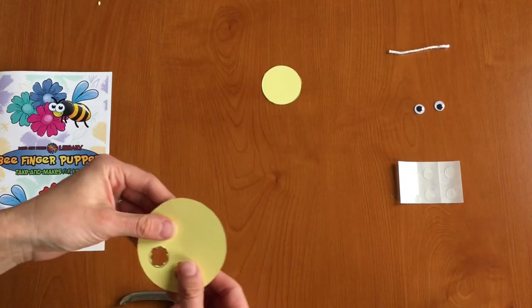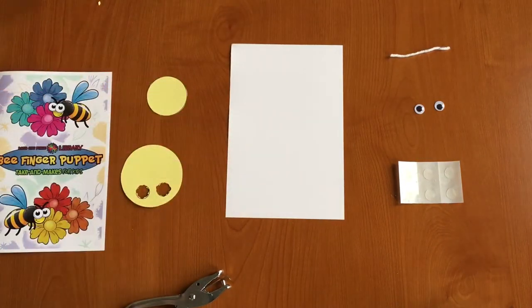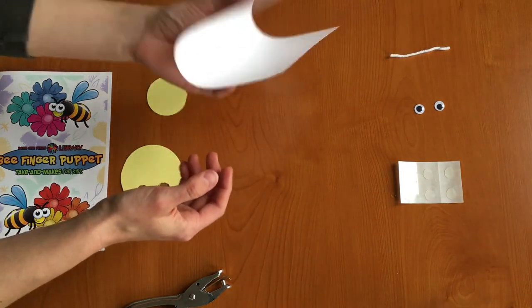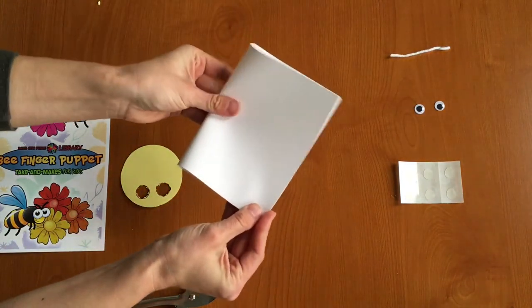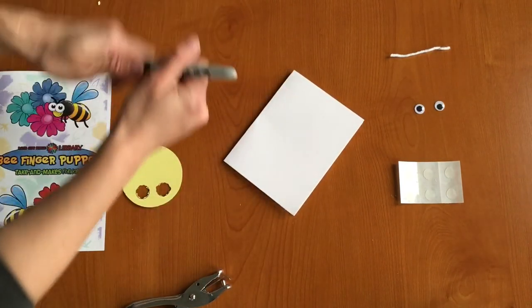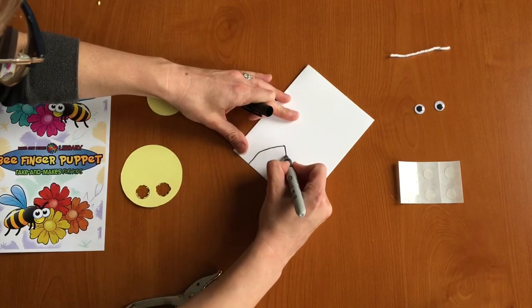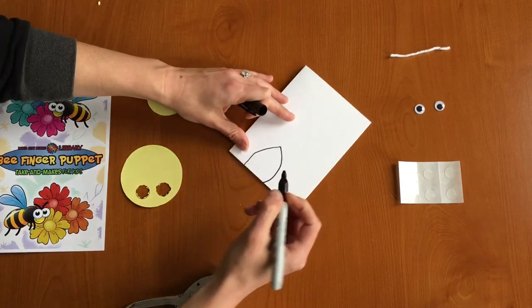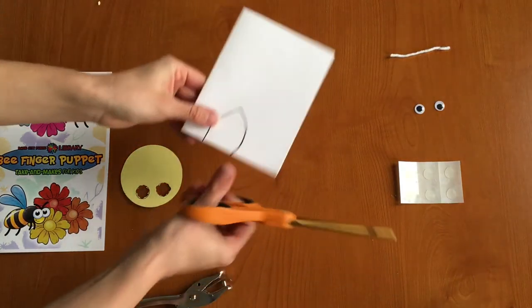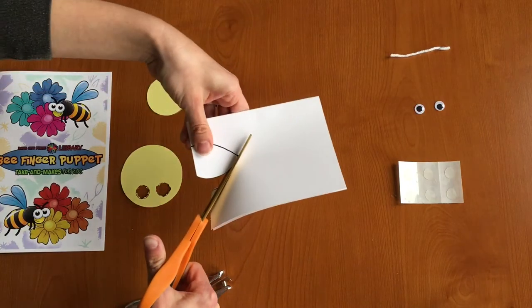All righty, our next step is to take our white piece of paper and we're going to cut out two wings for our bee. So I'm going to show you a trick. If you fold your piece of paper in half, go ahead and take your marker and draw your wing shape and then while still holding it in half cut out your wing. And this will cut out two for you.